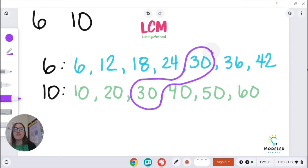Do you see anything else that they might have in common? In this case, I do not. So my least common multiple is as easy as that. My least common multiple is 30.